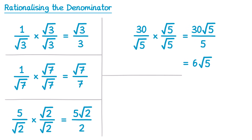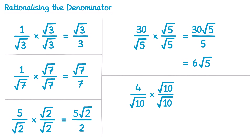Let's try another one. So for this one we're going to do 4 over root 10. We multiply by root 10 over root 10. On the top, 4 lots of root 10 is 4 root 10, and on the bottom, root 10 times by itself is 10. Now we can look at the 4 over 10 here to simplify, but 4 divided by 10 doesn't give you a nice integer answer this time. However, if you imagine it as a fraction 4 over 10 and simplify, 4 over 10 is the same as 2 over 5. So if we replace the 4 with a 2 and the 10 with a 5, we get 2 root 10 over 5.